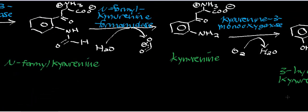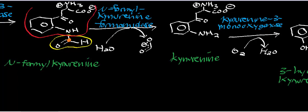N-formylkynurenine, which is committed to the catabolic pathway, is going to react with a hydrolytic enzyme. The hydrolytic enzyme targets the carbon I'm highlighting in orange — that's the carbon where the nucleophilic acyl substitution will occur. This molecule is called N-formylkynurenine because this group highlighted in yellow is the formyl group; the rest of the molecule is kynurenine. N-formylkynurenine formamidase is going to hydrolyze off that formyl group, leaving it as formate. Formate is a toxic molecule, but we have catabolic pathways to deal with it, which we'll cover in another video.